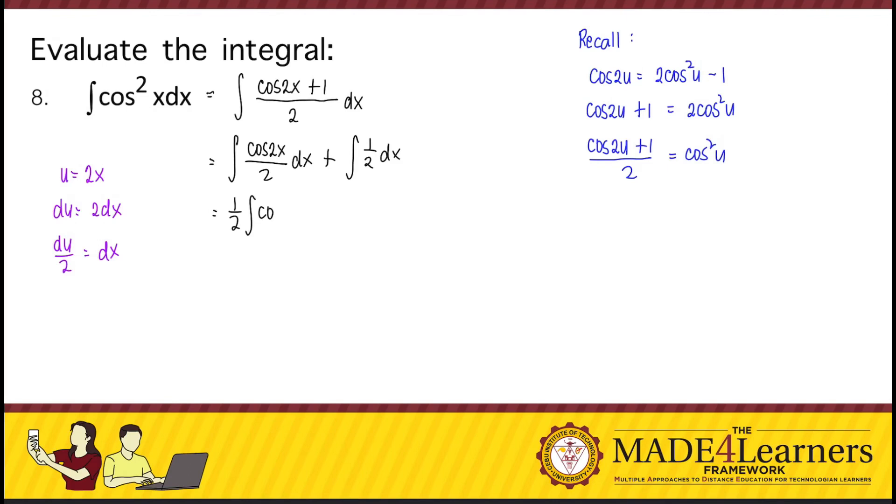So, this is 1 half integral of cosine of u, that's du over 2, plus 1 half integral of dx.